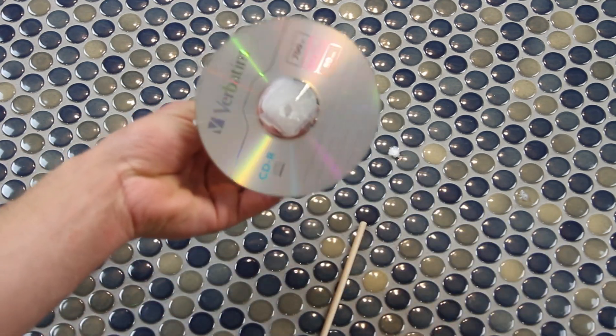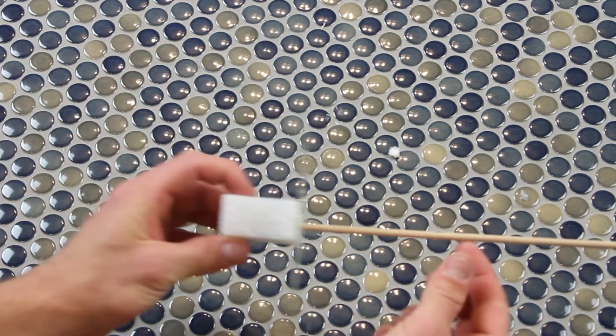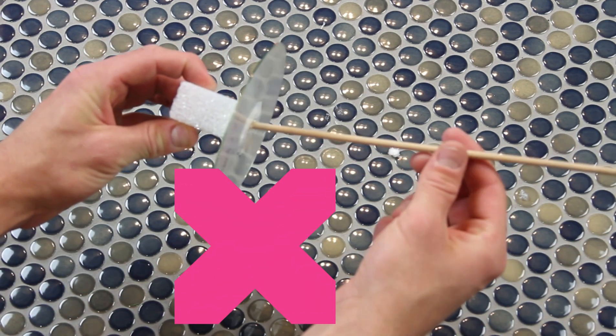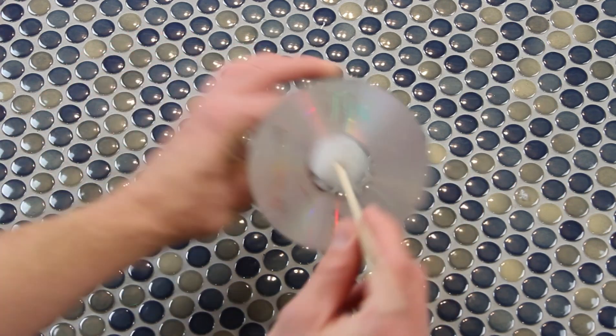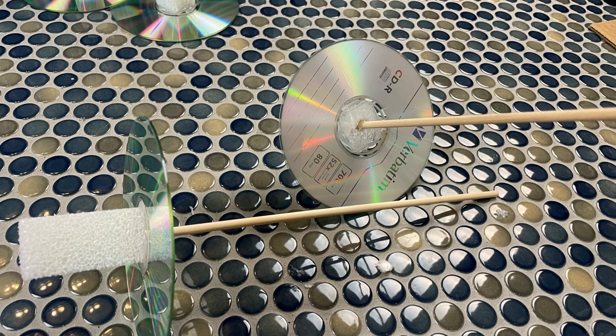While that glue is drying is your chance to make sure that it's coming out straight and in the middle of the CD. You can always add a little bit more reinforcements to make sure there's no slipping going on.